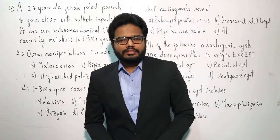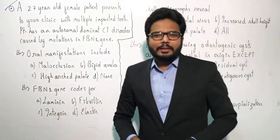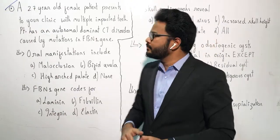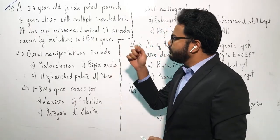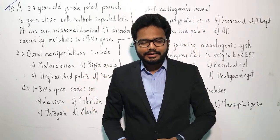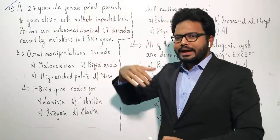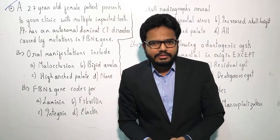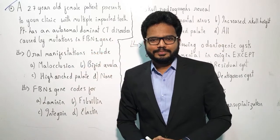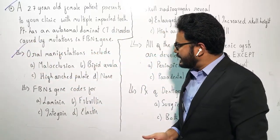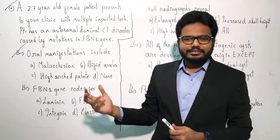So let's start our question. A 27-year-old female patient presents to your clinic with multiple unerupted or impacted teeth. The patient has an autosomal dominant connective tissue disorder caused by mutations in the FBN1 gene. What are the oral manifestations of this patient? Apart from multiple impacted teeth, what other oral manifestations do we commonly observe in patients with a defective FBN1 gene? Options: malocclusion, bifid uvula, high-arched palate, or none of the above. Which answer is more appropriate, and can you identify the syndrome?